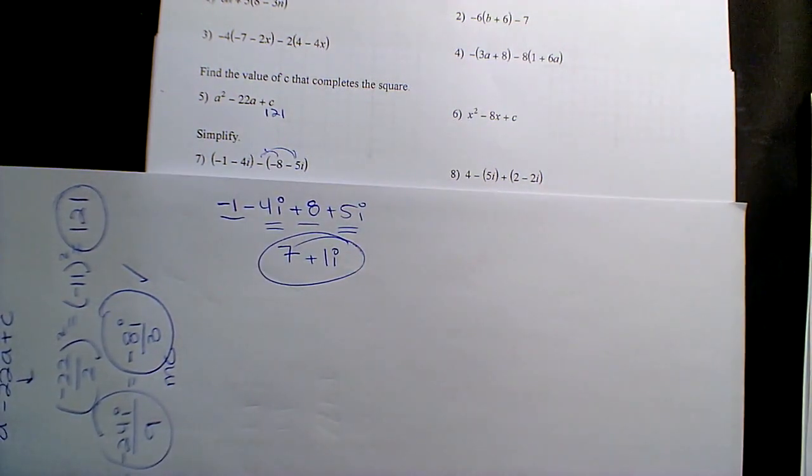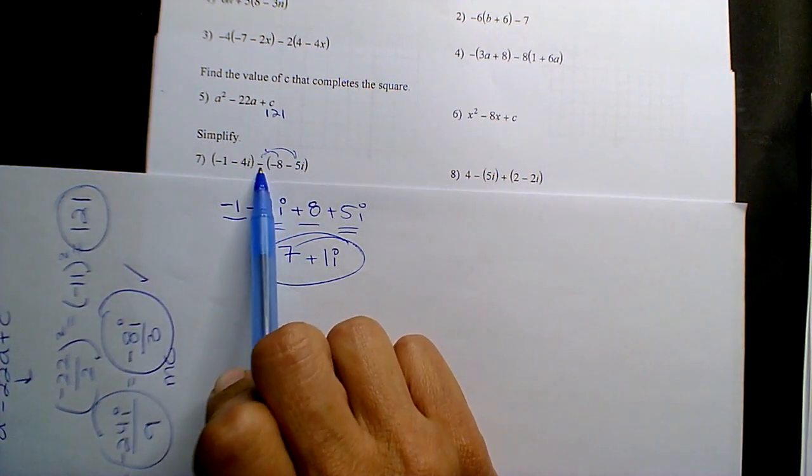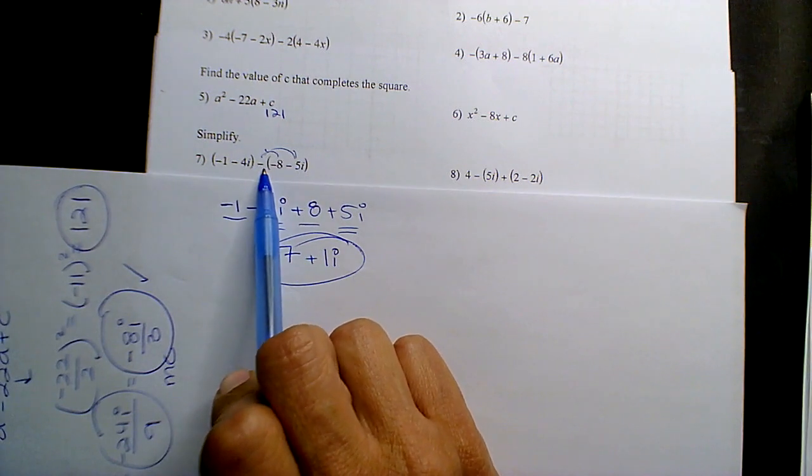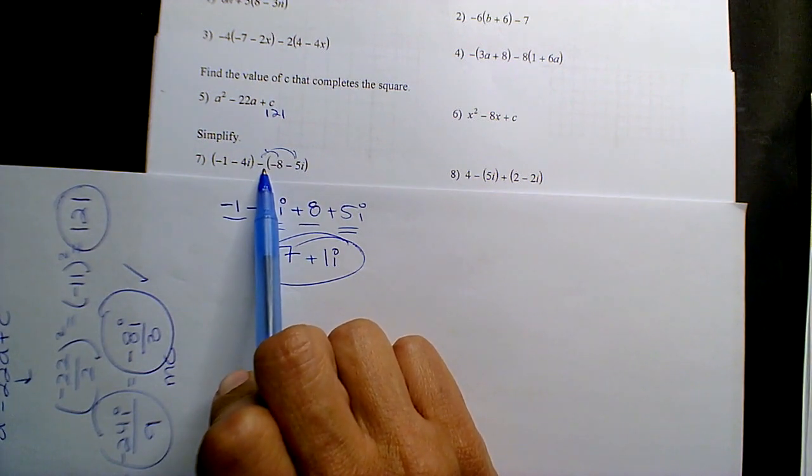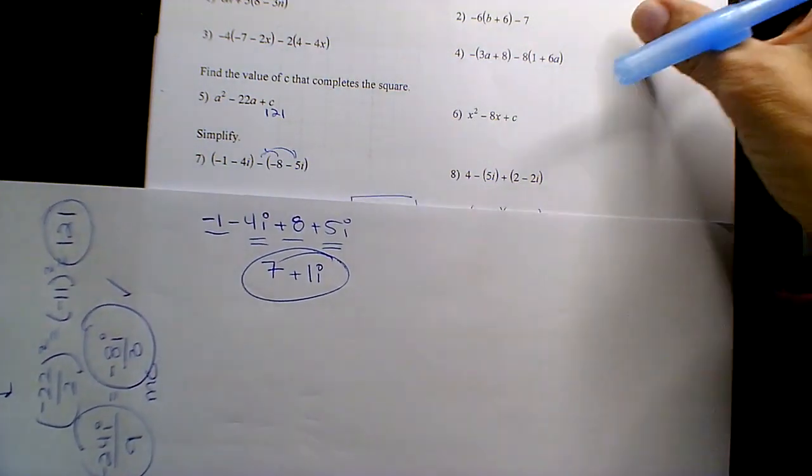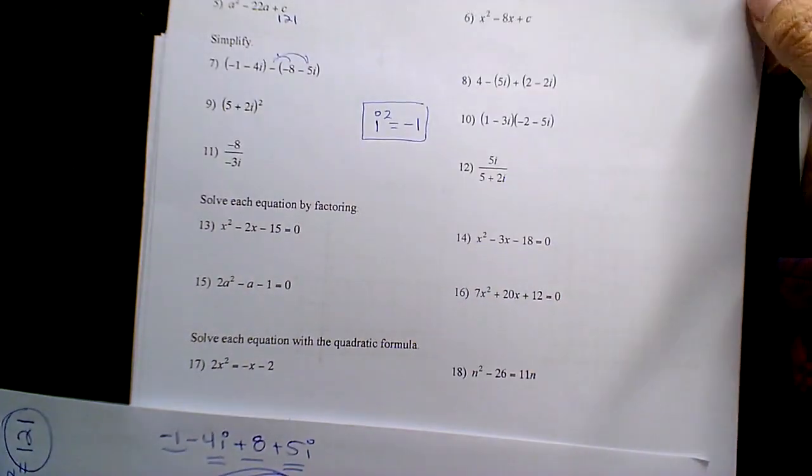So when there's an operation symbol of addition or subtraction in between the two parentheses, you're adding and subtracting. You are not foiling or distributive property multiplying.